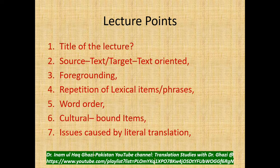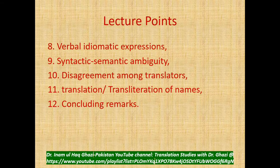Point number two is source text and target text oriented translations, followed by examples of foregrounding, repetition of lexical items or phrases, word order, cultural bound items, issues caused by literal translation, verbal idiomatic expressions, syntactic-semantic ambiguity, disagreement among translators, transliteration of names, and concluding remarks. In total, 12 points will be discussed in this lecture, and it shall be a practical analysis with examples presented.